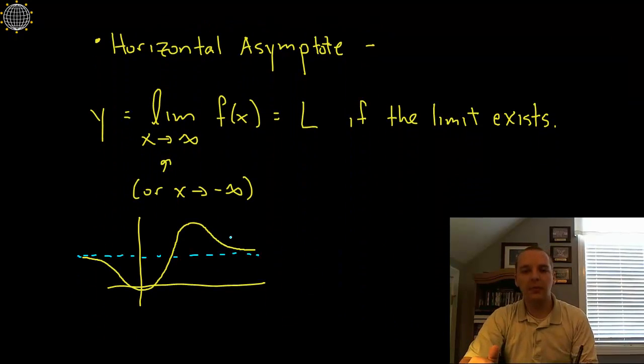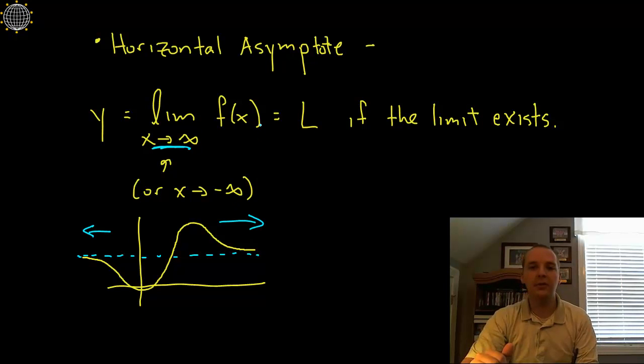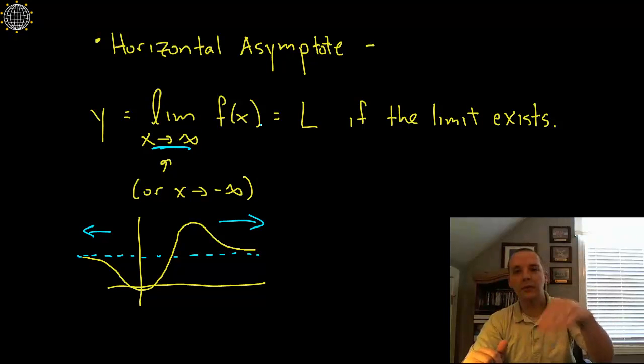Okay horizontal asymptote, I'm not going to go into a lot of details here. But this is dealing with the end behavior of the function. It looks at the limit for the function as the x's approach infinity, right going far this way or negative infinity. And you're basically just trying to see if your function levels out anywhere. If it does that could help you with a sketch of the graph.